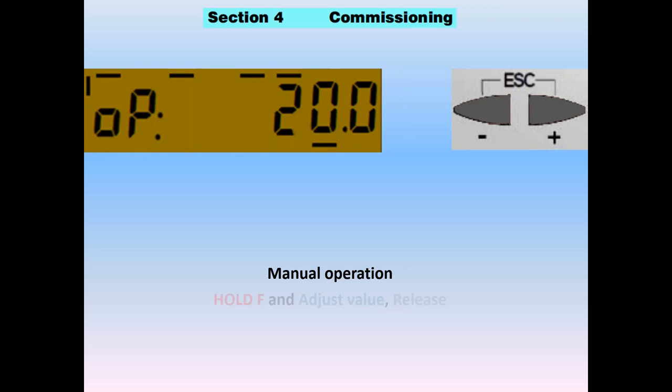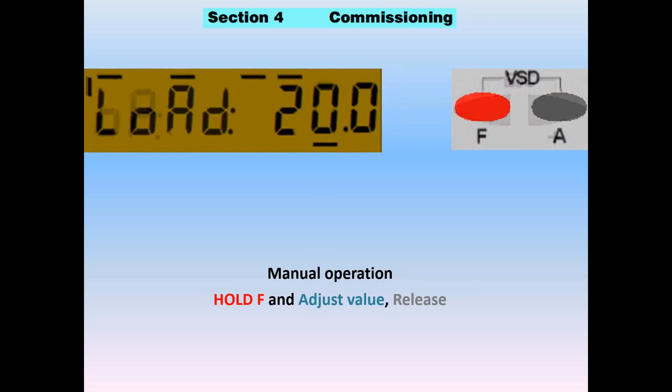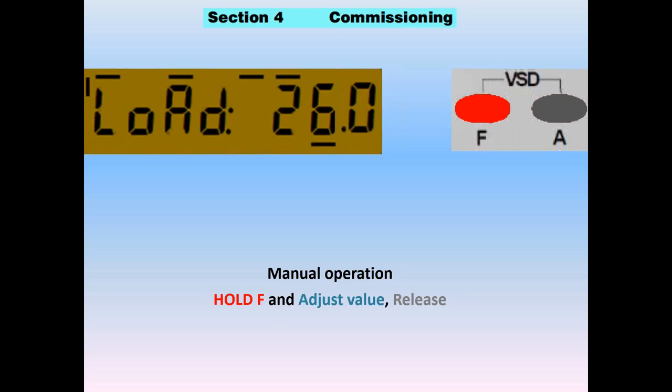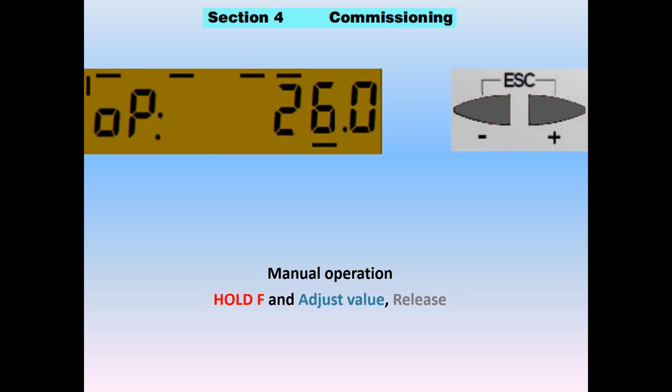For manual operation, hold the F key and while holding it, adjust the load number using plus or minus to set a value between 20 and 100. In this case, we'll go to 26% fire rate and release. The unit goes back and operates, staying at 26% fire rate. The display shows 26.0 flashing while running in manual, indicating the burner is in manual operation. A flashing operation percent means you're manually firing at that percentage.